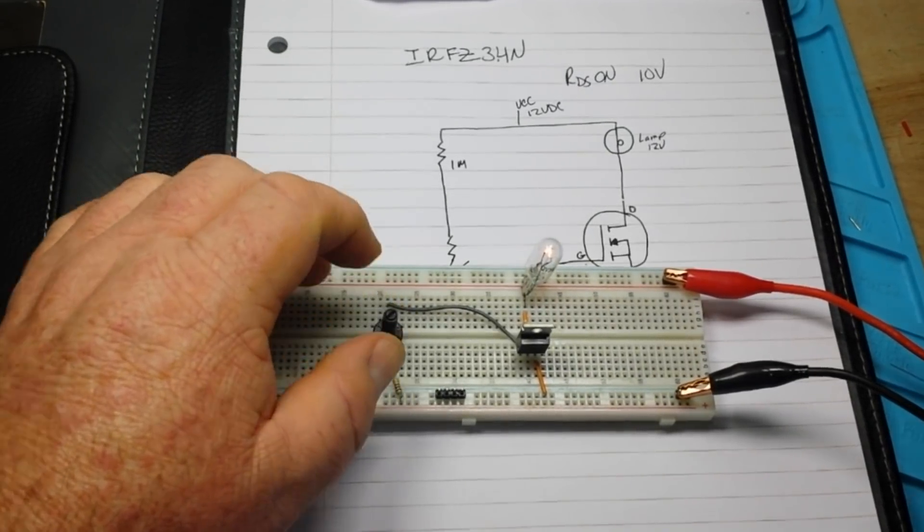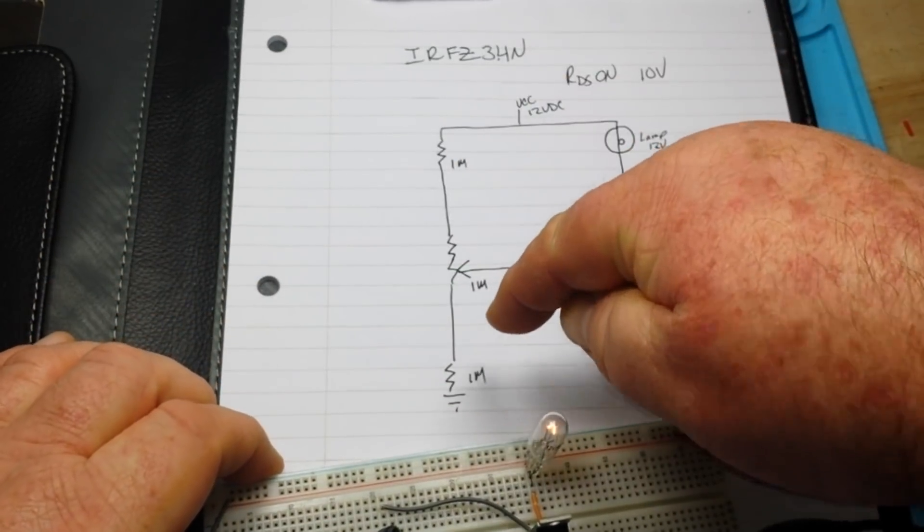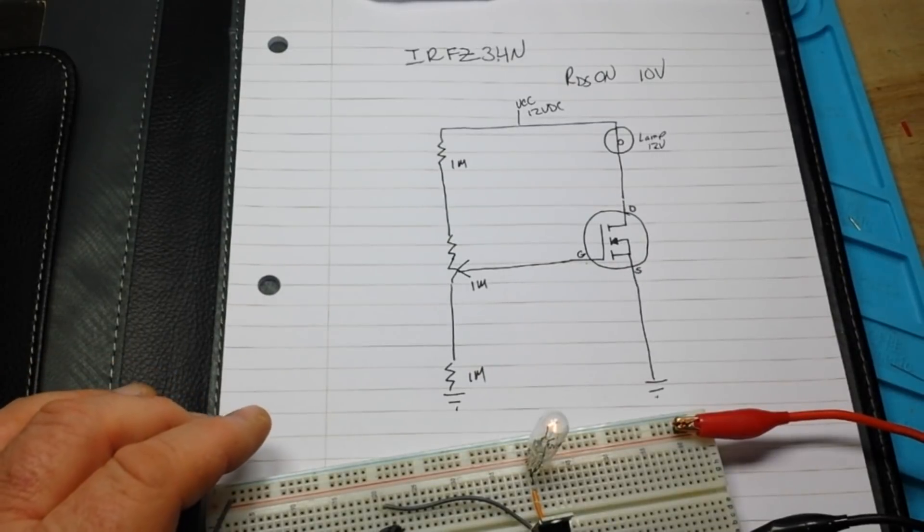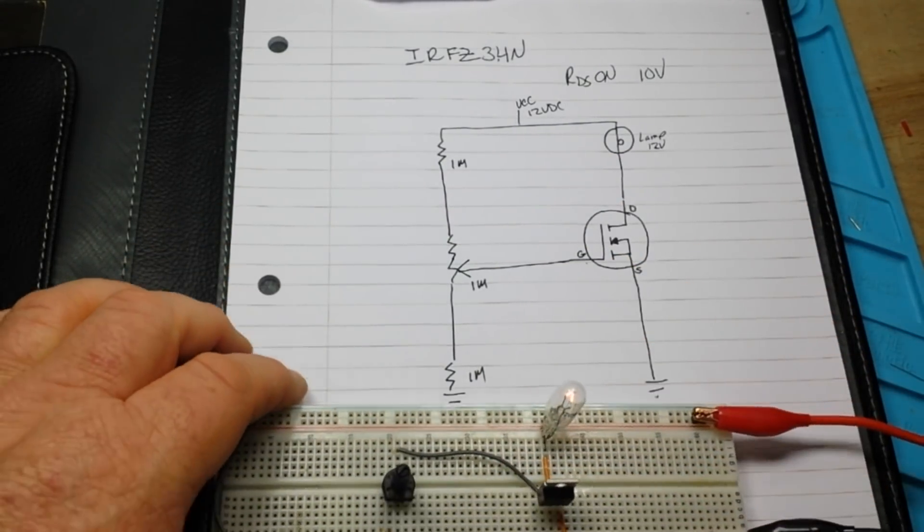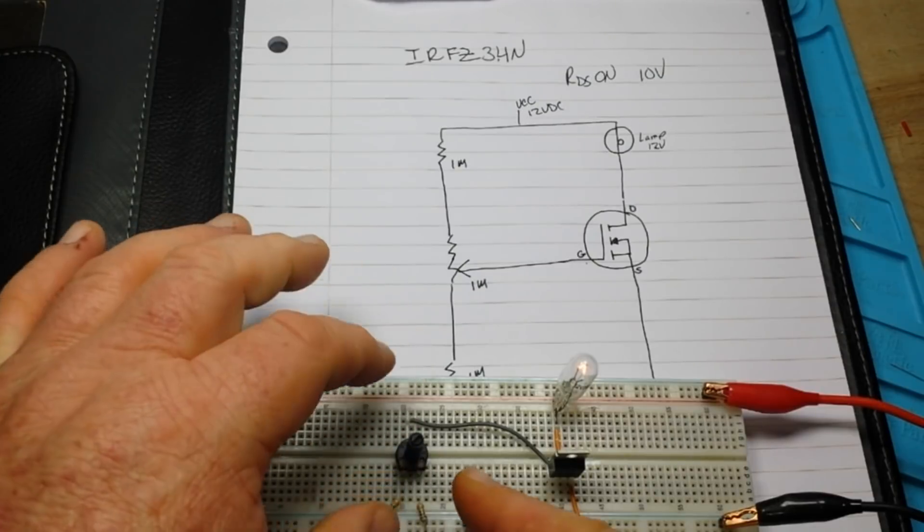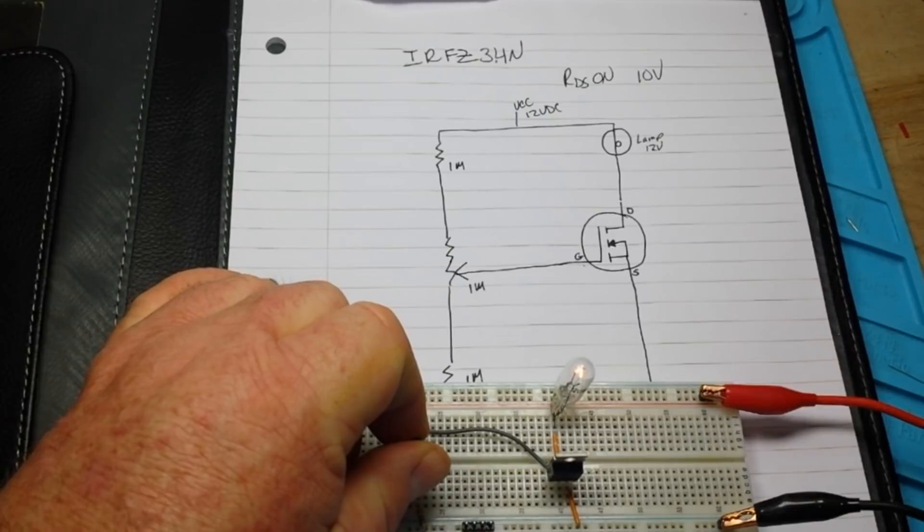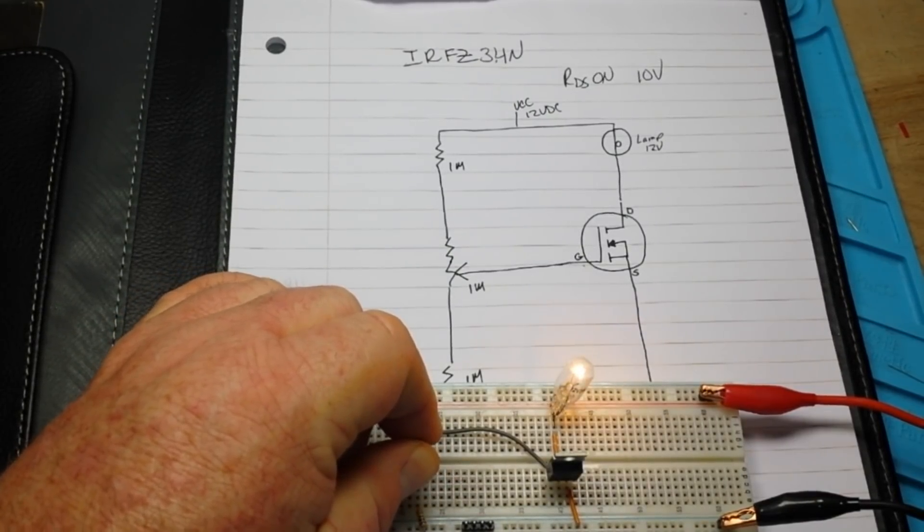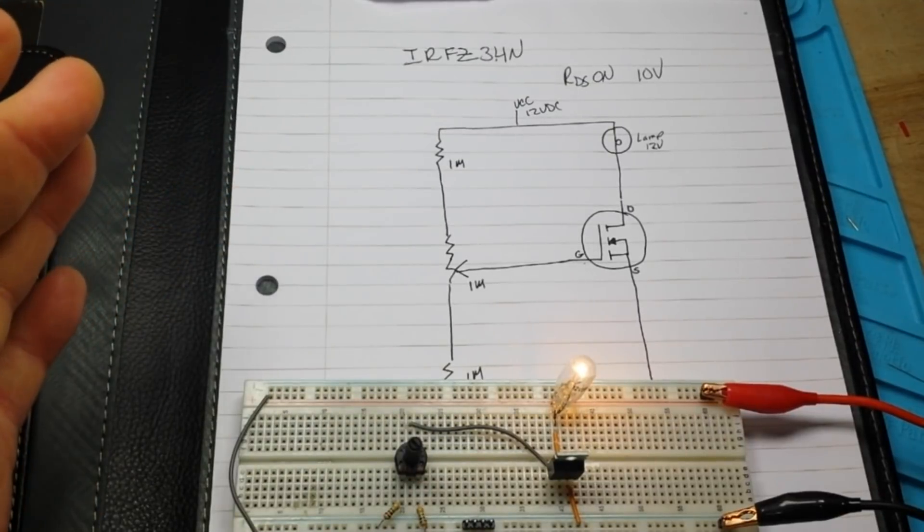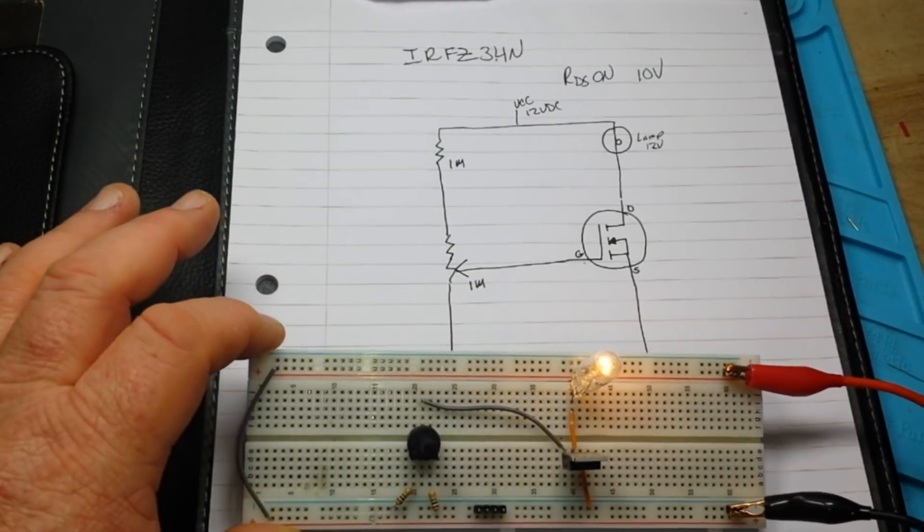Now, one thing you can do is you can vary your voltage resistor there, voltage divider to kind of tame out this. This has got a real narrow band in it. But it's the only one of these that I had available. But as you can see, it works out pretty well. And it's a simple circuit.